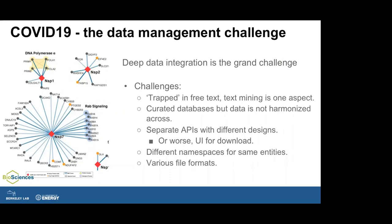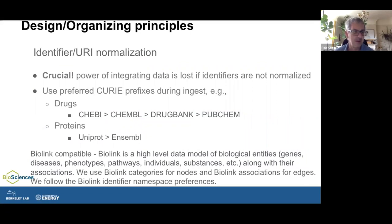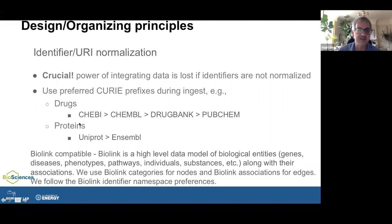When you drill down to these details, this expands into identifier and concept normalization and lots of mappings. We rely on existing mappings that are available. Part of this is encapsulated in the Biolink model — a high-level data model for biological entities spanning a set of entities relevant for biomedicine. We use Biolink categories to label nodes and associations between nodes. Biolink also provides preferences for namespaces, giving a principled way to harmonize data across different sources.